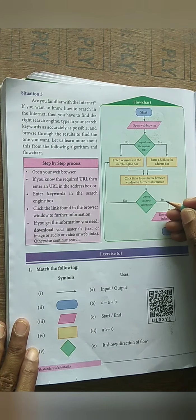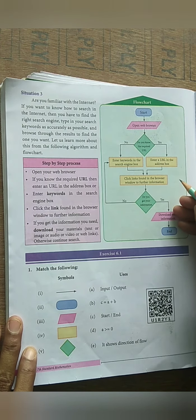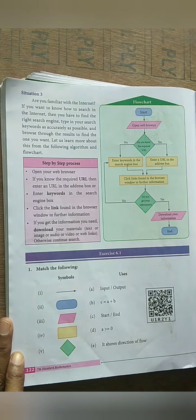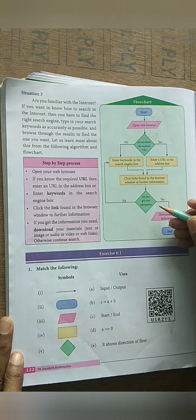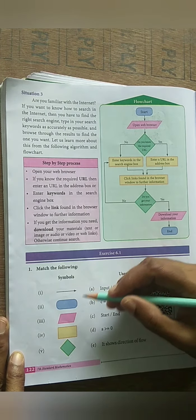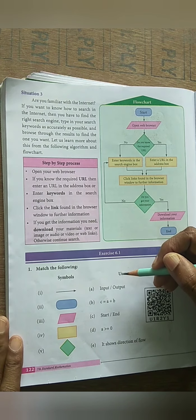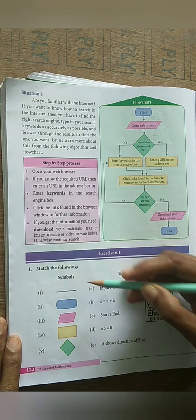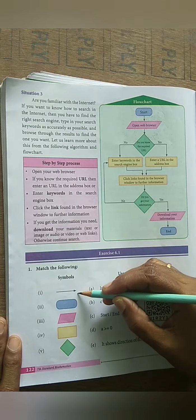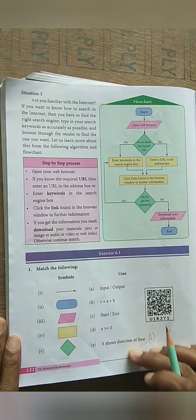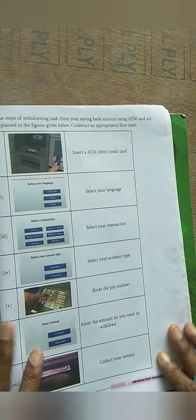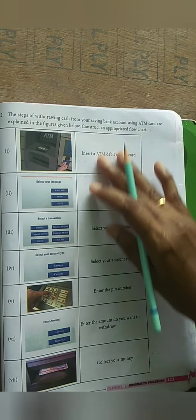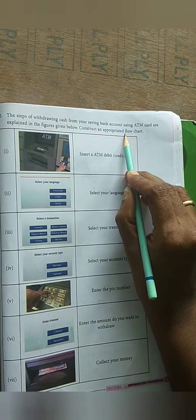I have taught you examples for conditional and sequential flowcharts. Other examples are given in your textbook - go through them. Now coming to exercise 6.1 - many problems are there. Understand the concept carefully and solve the problems. I will solve one or two problems in the exercise; the remaining you solve as homework. In the first question, what is the flowline? It shows direction of flow - that is your answer. Similarly, you can solve for all the symbols.